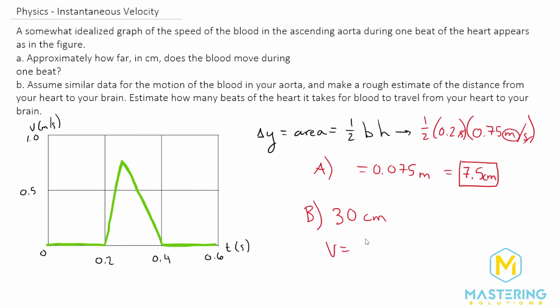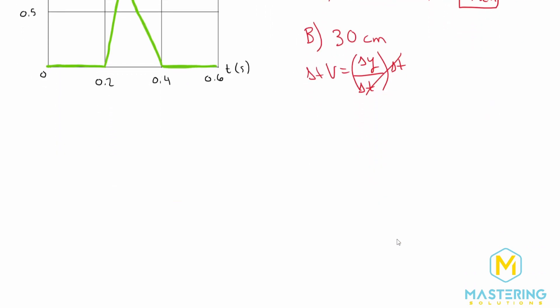So velocity is going to be the change in the distance, which in this case is delta y, over the change in time, which is delta t of course. So if we rearrange for delta t, we multiply both sides by t, that goes away, and let's come over here. And so now we have delta y is equal to velocity times the change in time. And now we isolate t by dividing both sides by velocity, and now we have delta t is equal to delta y divided by the velocity.